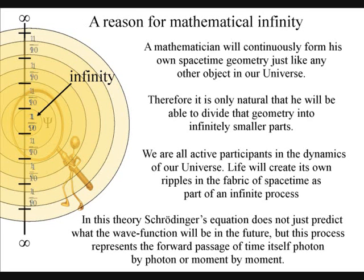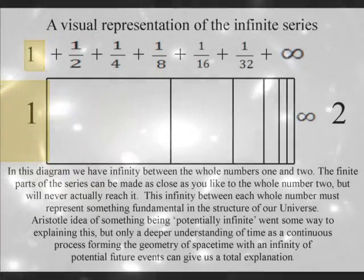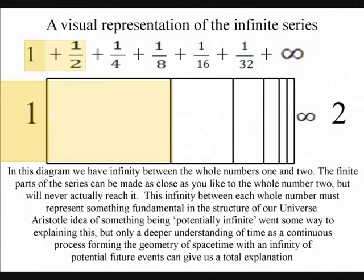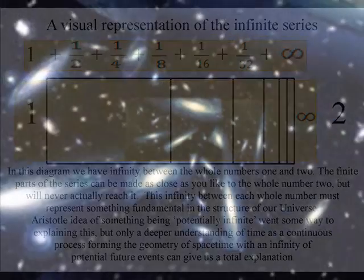The universe is dynamic and expanding, and this forms the infinities of human mathematics. In this diagram, we have infinity between the whole numbers one and two. The finite part of this series can be made as close as you like to the whole number two, but will never actually reach it. This infinity between each whole number must represent something fundamental in the structure of our universe.